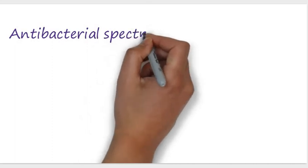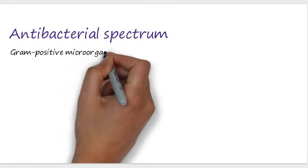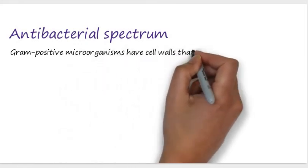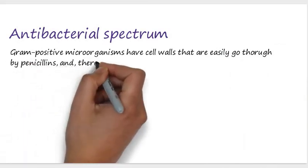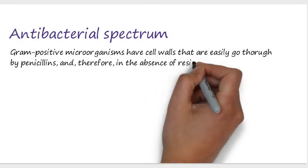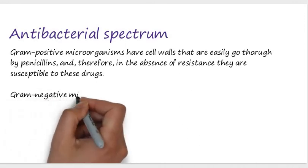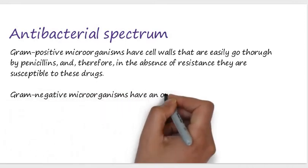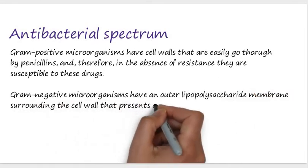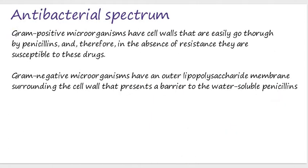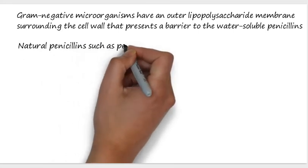Regarding the antibacterial spectrum of penicillin: gram-positive microorganisms have cell walls that are easily penetrated by penicillin and, in the absence of resistance, are susceptible to these drugs. Gram-negative microorganisms have an outer lipopolysaccharide layer or membrane surrounding the cell wall that presents a barrier to the fat-soluble penicillin.